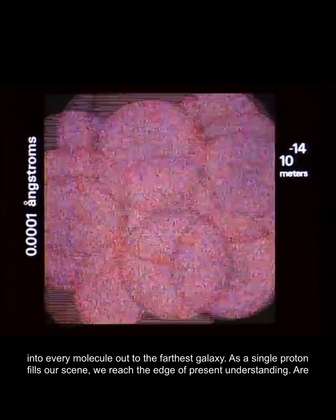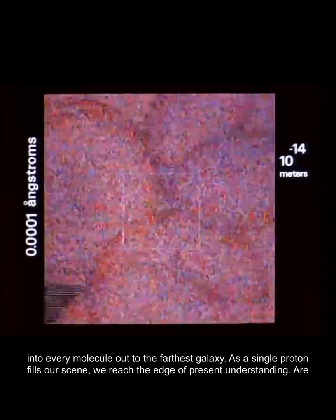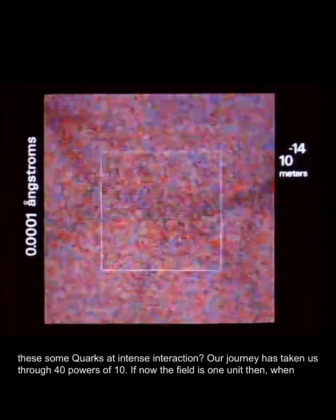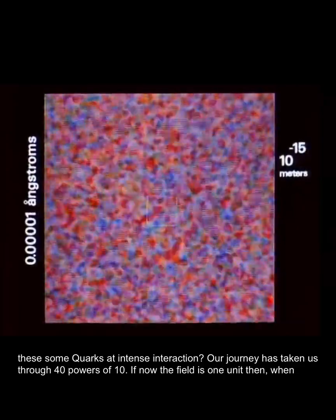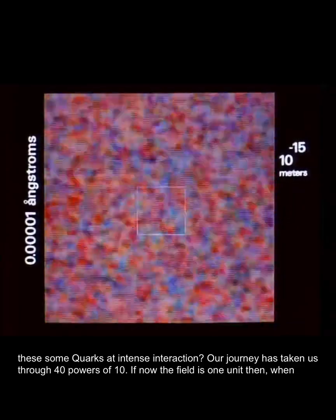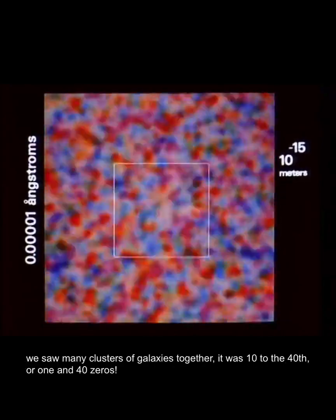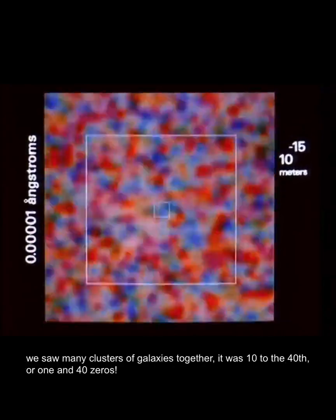As a single proton fills our scene, we reach the edge of present understanding. Are these some quarks at intense interaction? Our journey has taken us through 40 powers of 10. If now the field is one unit, then when we saw many clusters of galaxies together it was 10 to the 40th, or one and 40 zeros.